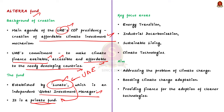The Alterra fund will focus on four key areas: energy transition, industrial decarbonization, sustainable living, and climate technology. By focusing on these areas, the fund will help address the problems of climate change and boost climate change adaptation. The fund mainly aims to provide finance for the adoption of cleaner technologies. In this line, India is going to get funds from Alterra for the development of 6 gigawatt clean energy capacity.